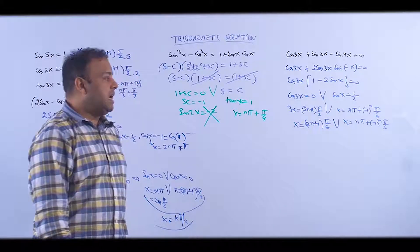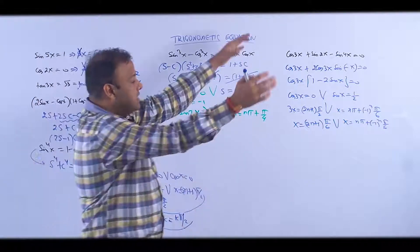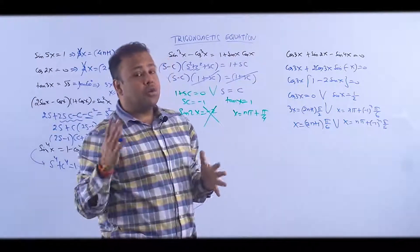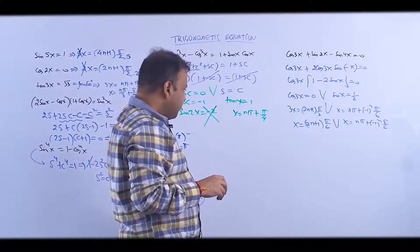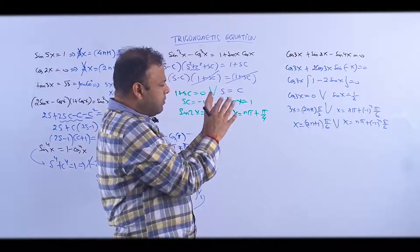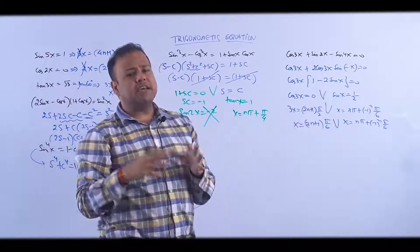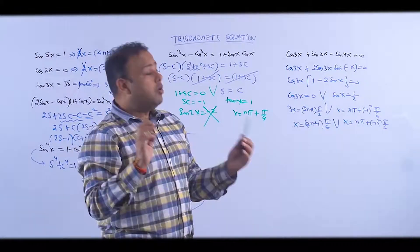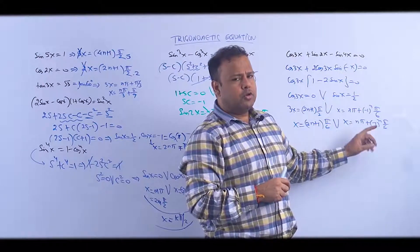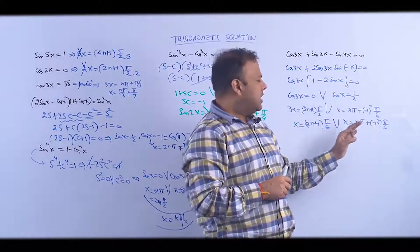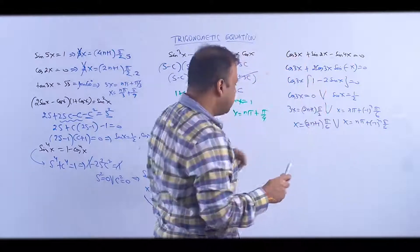There may be possibility that dono merge ho jaayein. If it's not immediately obvious, there are two ways: either write 5-6 terms of each solution and see, or use odd-even case analysis. I've already done the odd-even approach, so let me now write the terms.